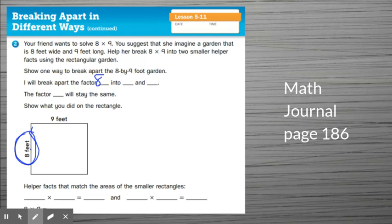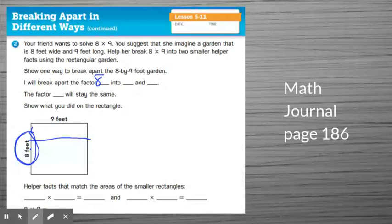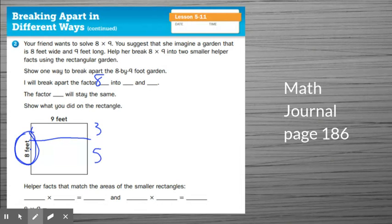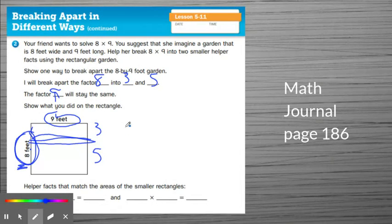Into blank and blank. So I'm going to split this. And the way that I wanted to split it was 3 and 5. 3 plus 5 equals the whole 8 feet. So I'm splitting that into a 3 and 5. The factor 9 is going to stay the same. We're not changing the 9, we're leaving that alone. Then it says to show what we did on the rectangle, we already have drawn the rectangle to show where we split it. Now, the next part says helper facts that match the areas of the smaller rectangles. I'm going to use some different colors here. So I want to know the area of the top and I want to know the area of the bottom.